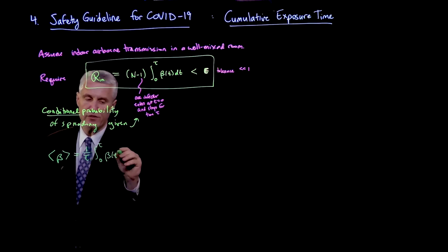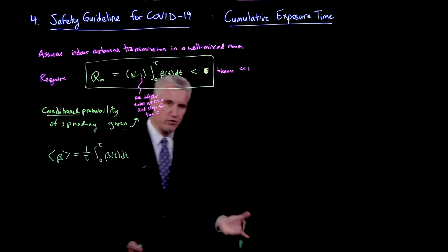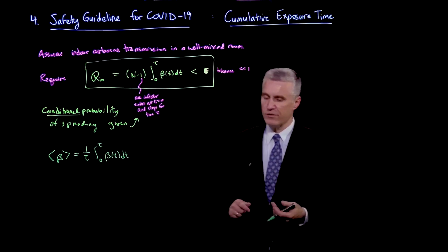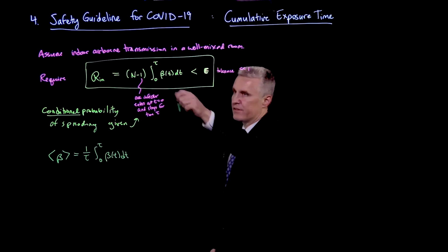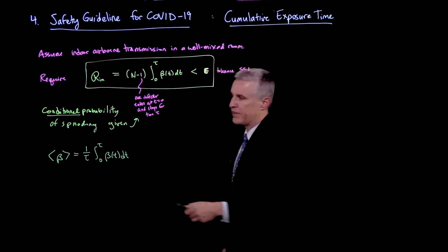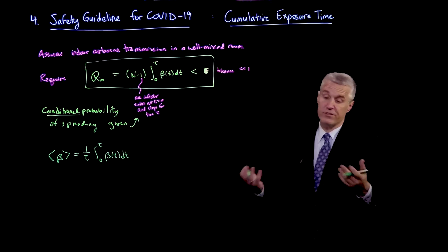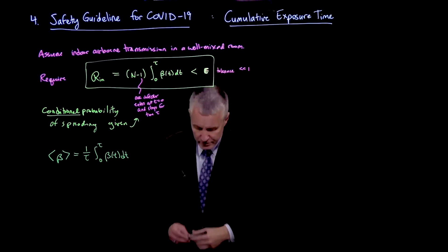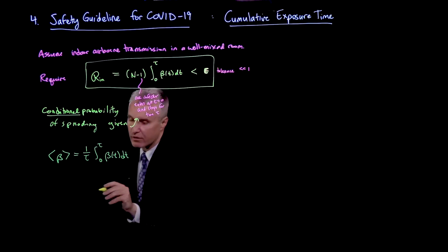So the transmission rate may be changing in time, for example, as droplets are building up in the room, as we've discussed. But let's just think of kind of an average transmission rate. Then this integral in time is just beta brackets, beta average times tau.